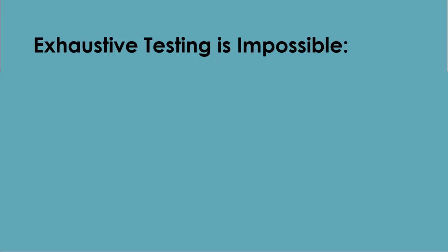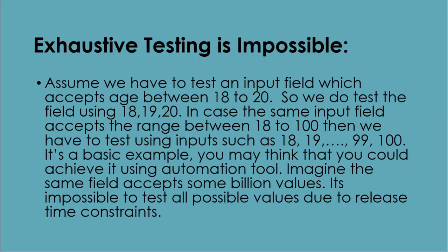The second principle is exhaustive testing is impossible. Here we have two questions: what is exhaustive testing and why is it impossible? Testing all functionalities using all valid and invalid inputs and preconditions is known as exhaustive testing. To understand why it's impossible, assume we have to test an input field which accepts age between 18 to 20.